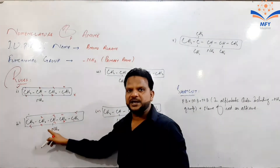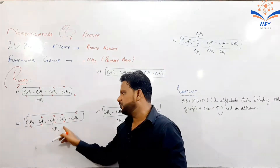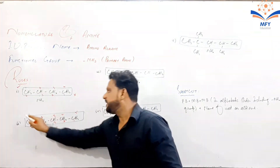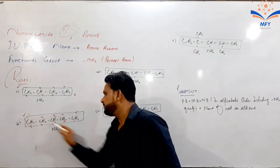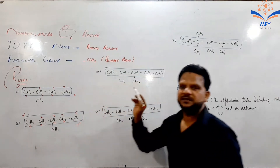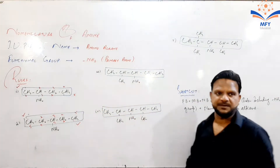For a hydrocarbon chain where the amino group gets the same position from both left and right sides and there are no branches, it is our choice — we can number from either side and the IUPAC name will be the same.